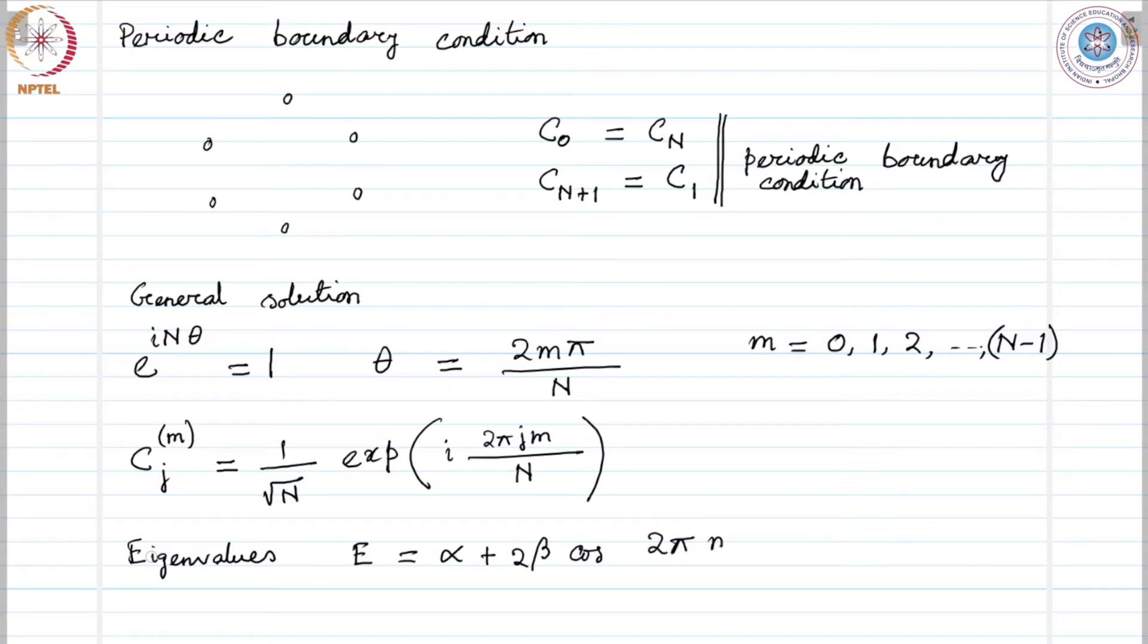At this level, the energy eigenvalue is always α plus 2β cosine of θ. This quantity becomes continuous in the spectrum when n tends to infinity.